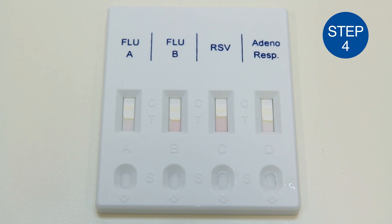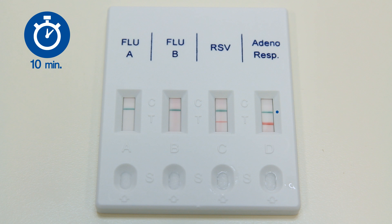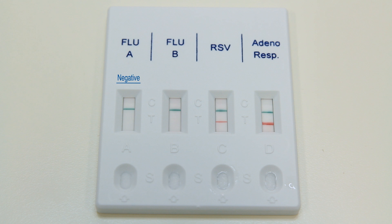Step 4: Wait for coloured bands to appear and read the results at 10 minutes. The intensity of the red coloured lines in the result window will vary depending on the concentration of antigens present in the specimen. However, neither the qualitative value nor the rate of increase in antigens can be determined by this qualitative test.